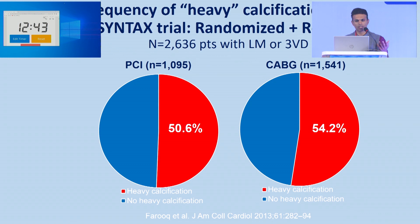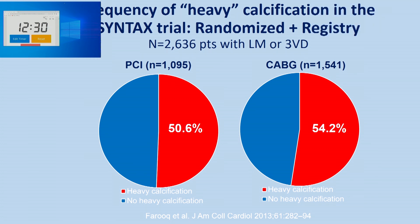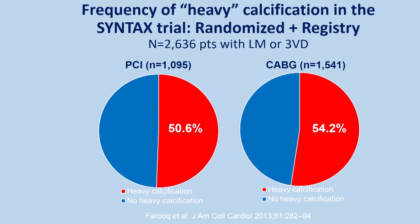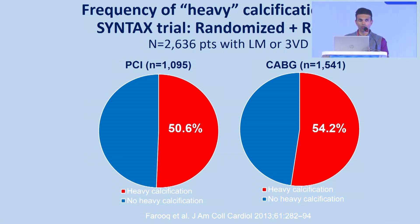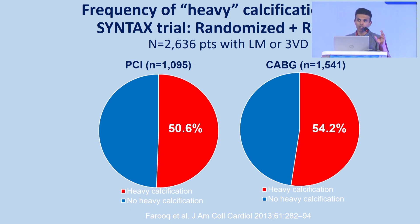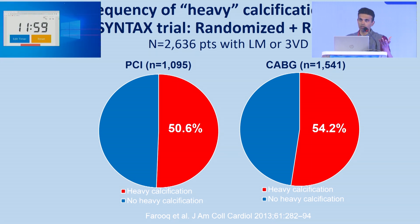When you look at more modern studies like the SYNTAX trial that have actually looked at left main or triple vessel disease with both PCI and CABG, these demonstrate heavy calcification in almost half of the patients — not a big surprise because these are patients with bad coronary disease. This goes back to what Professor Malik said this morning: the patients we should be treating are the ones with really bad coronary disease, because those are the ones where we're going to make a difference on their symptoms, survival, and cardiovascular death. But that only makes sense if we actually treat them properly, which means when you have calcification, you need to quantify it, define it, and treat it appropriately.